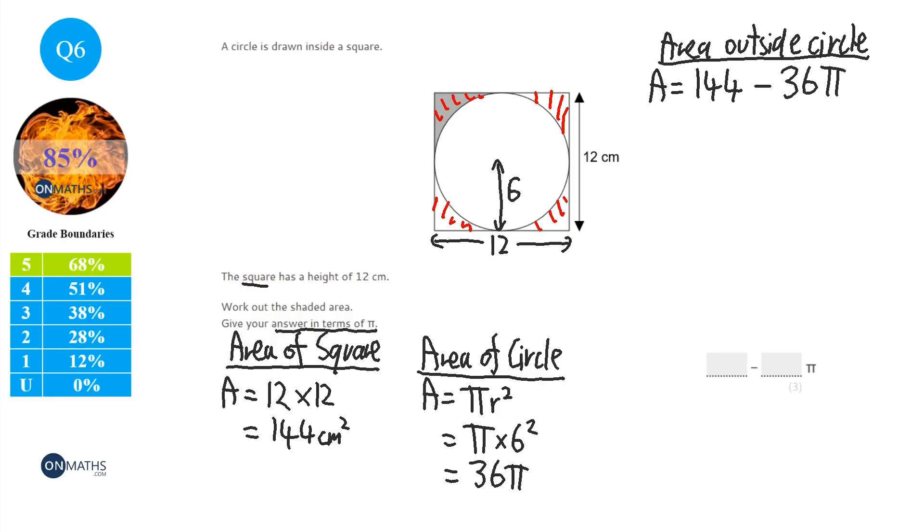Okay. Now, to work out the shaded area, which is what the question asked for. Now, looking at that, we've got four parts. We've got this part, this part, this part, and this part. And all four of them are equal. And we only want one of them. Okay. So to work out the shaded area, we get our answer from before. And we divide it by four.